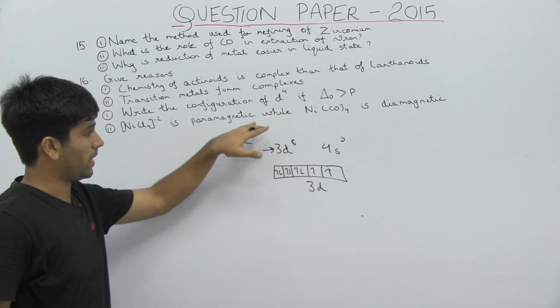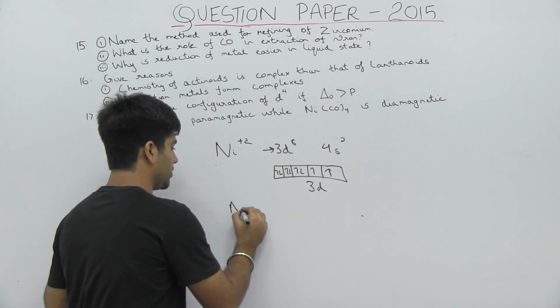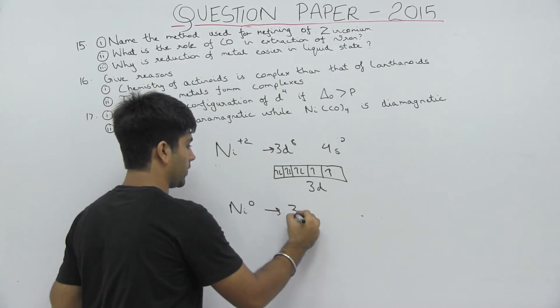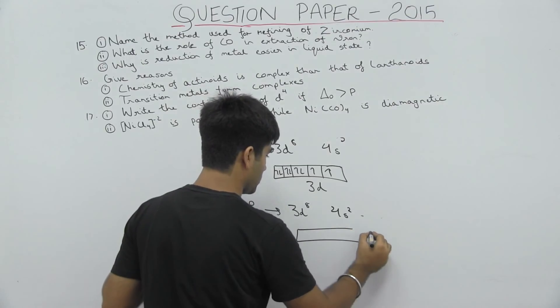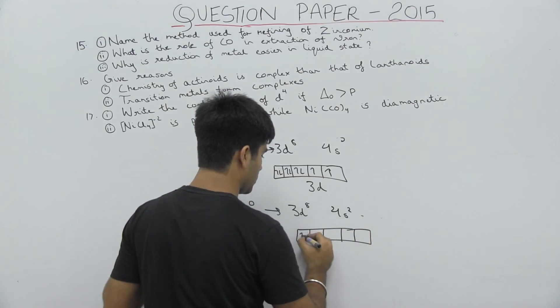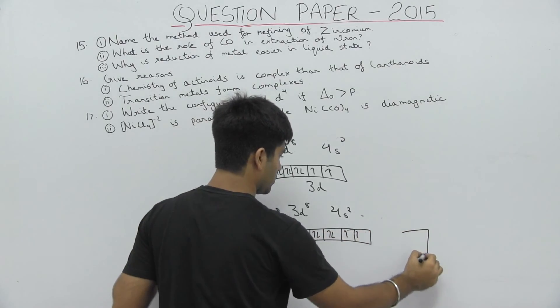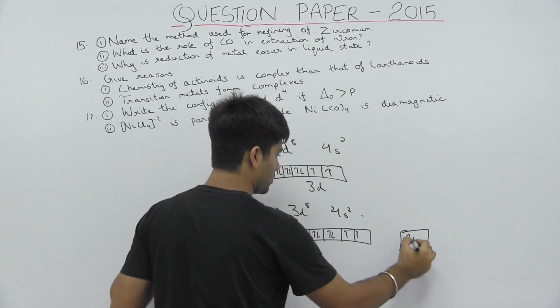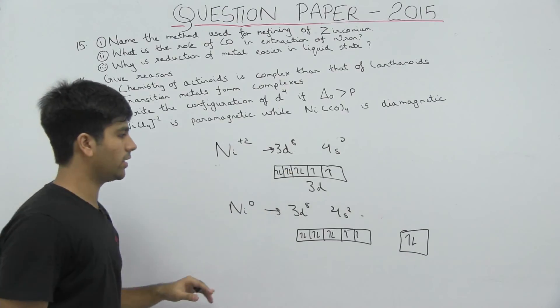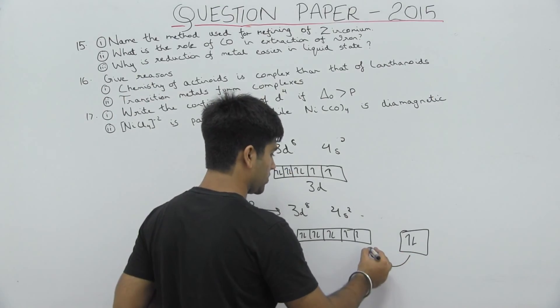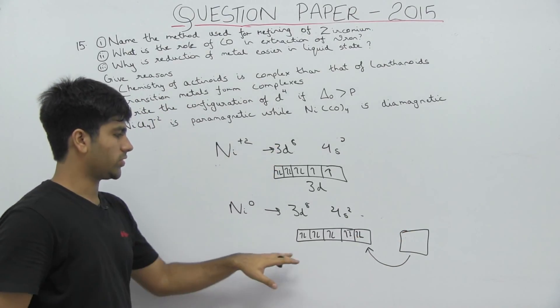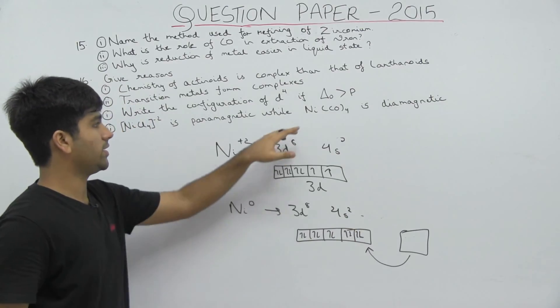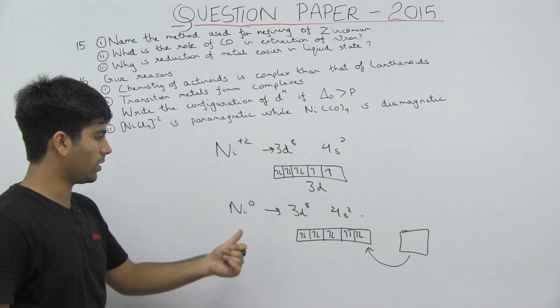Now in Ni(CO)4, nickel is 0, its configuration is 3d8 4s2. Since CO is a strong field ligand, these electrons will jump, and its configuration will become 3d10. All electrons are paired here. So that's why Ni(CO)4 is diamagnetic because there is no unpaired electron.